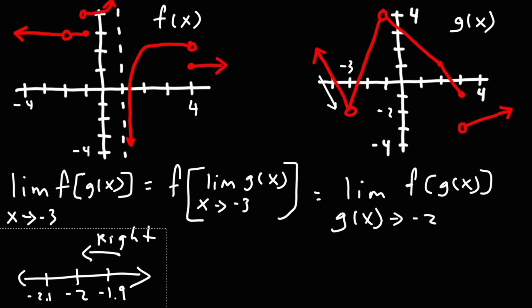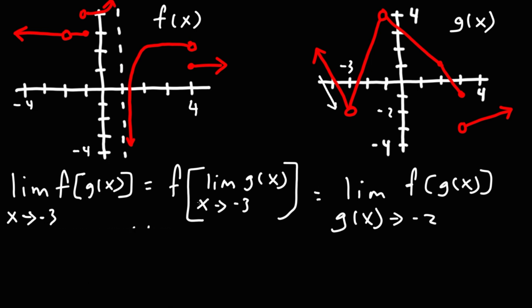Feel free to rewind the video to make sure you grasp that concept, because it's important when dealing with the limit of composite functions. Now that we know g is approaching negative 2 from the right, we move on to the graph of f. We need to look at the x value of negative 2 and approach it from the right. Whether we approach from the left or the right, we get the same y value for f, which is positive 3. So the end result is a value of 3.